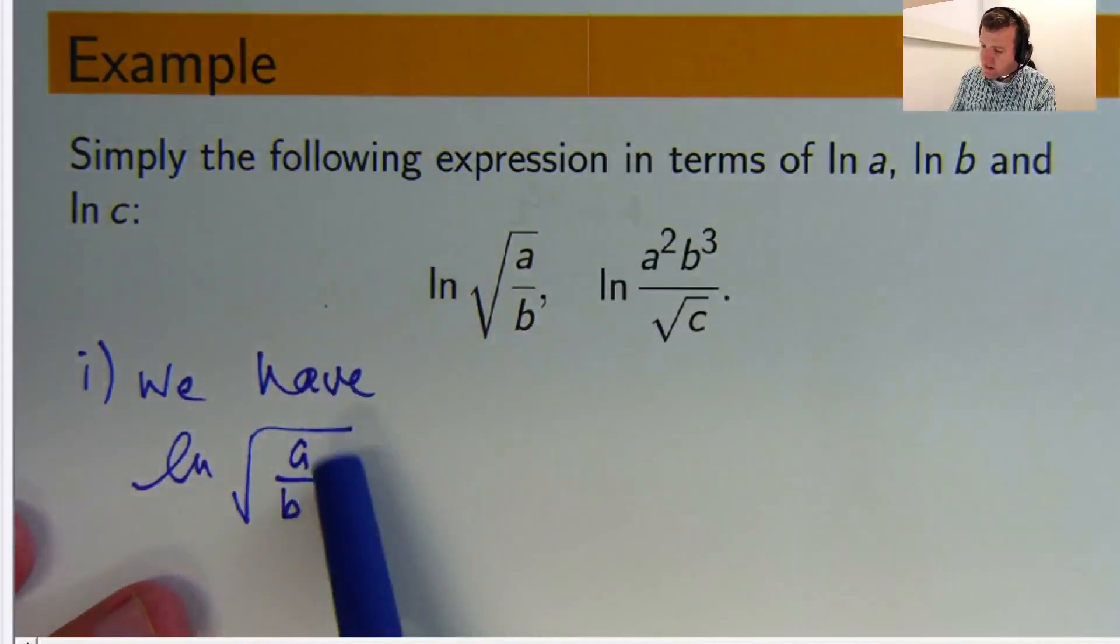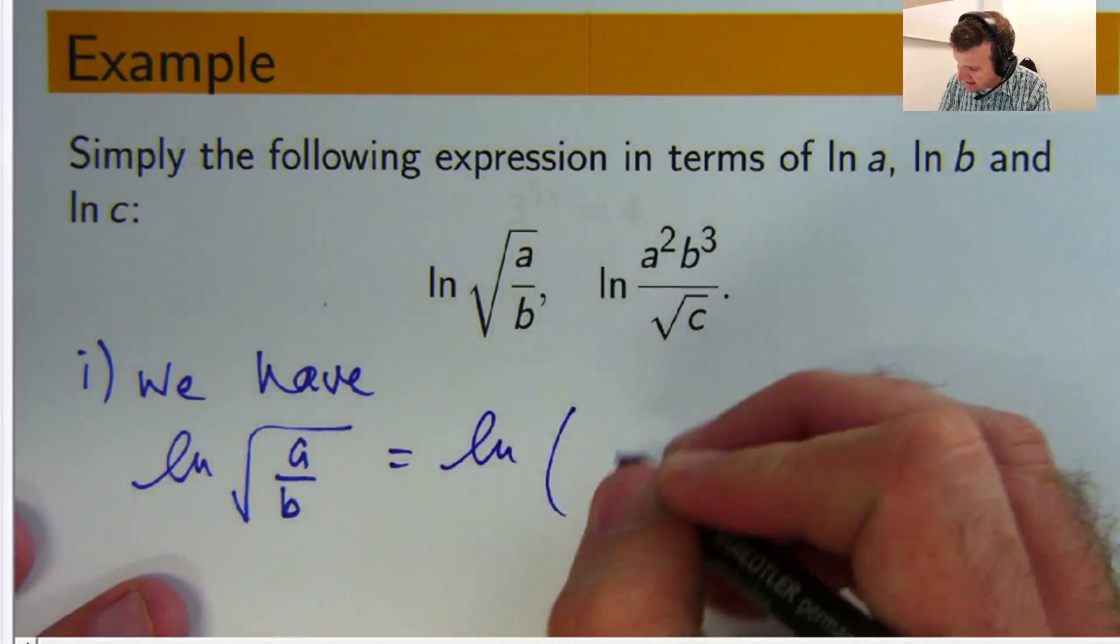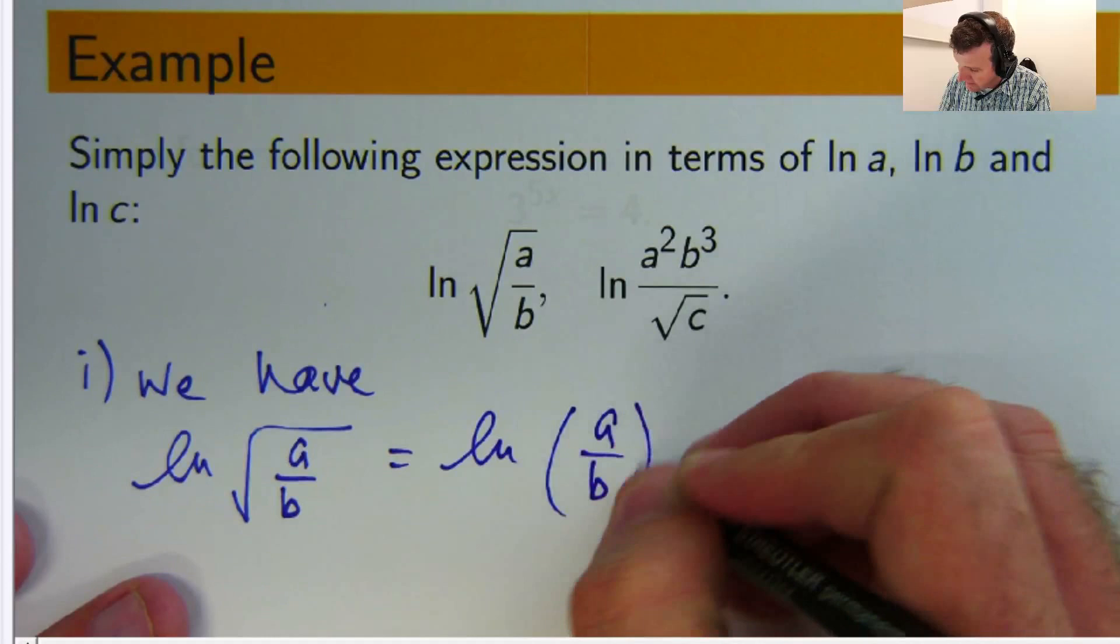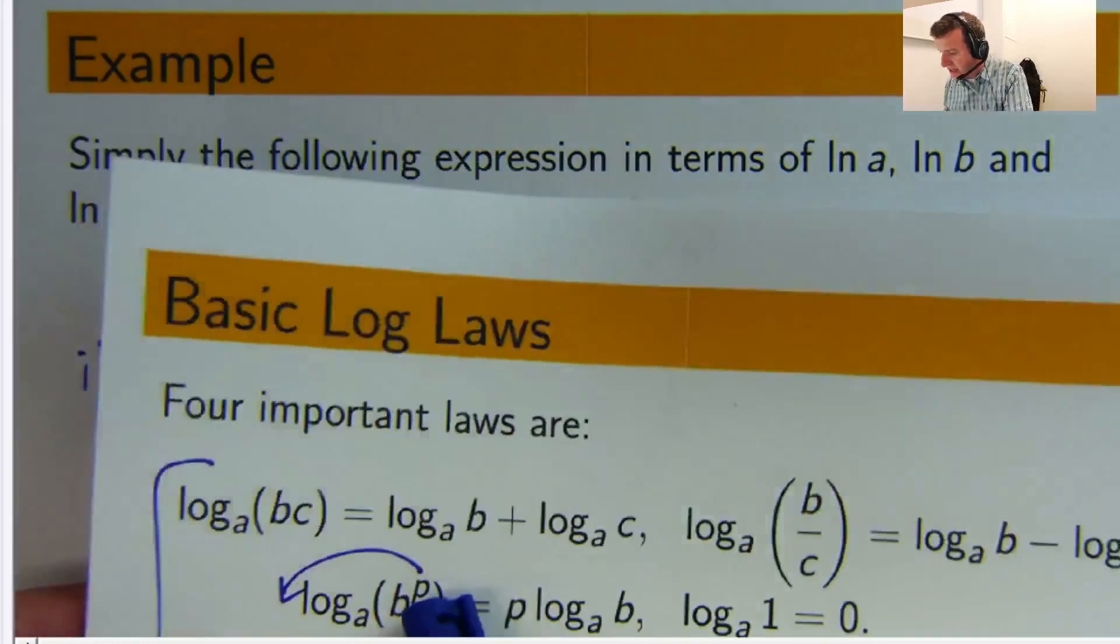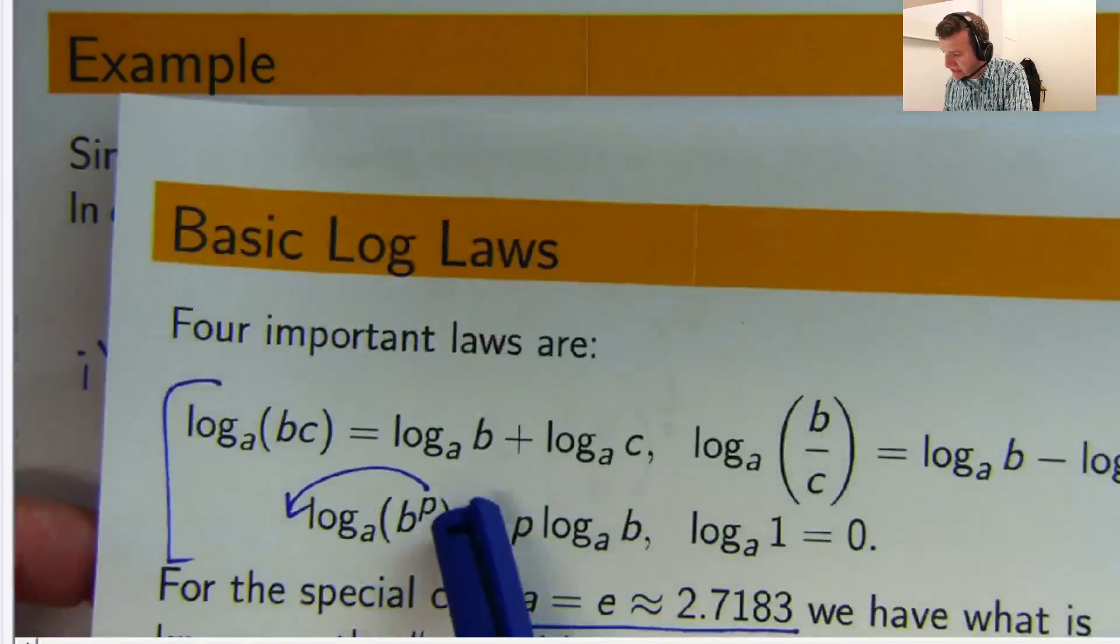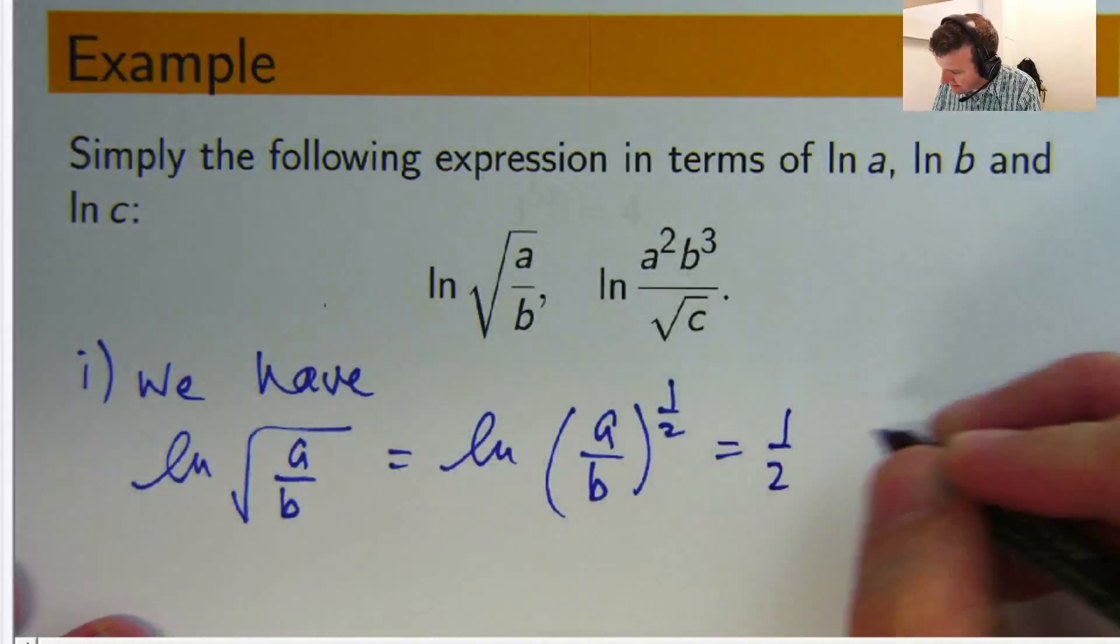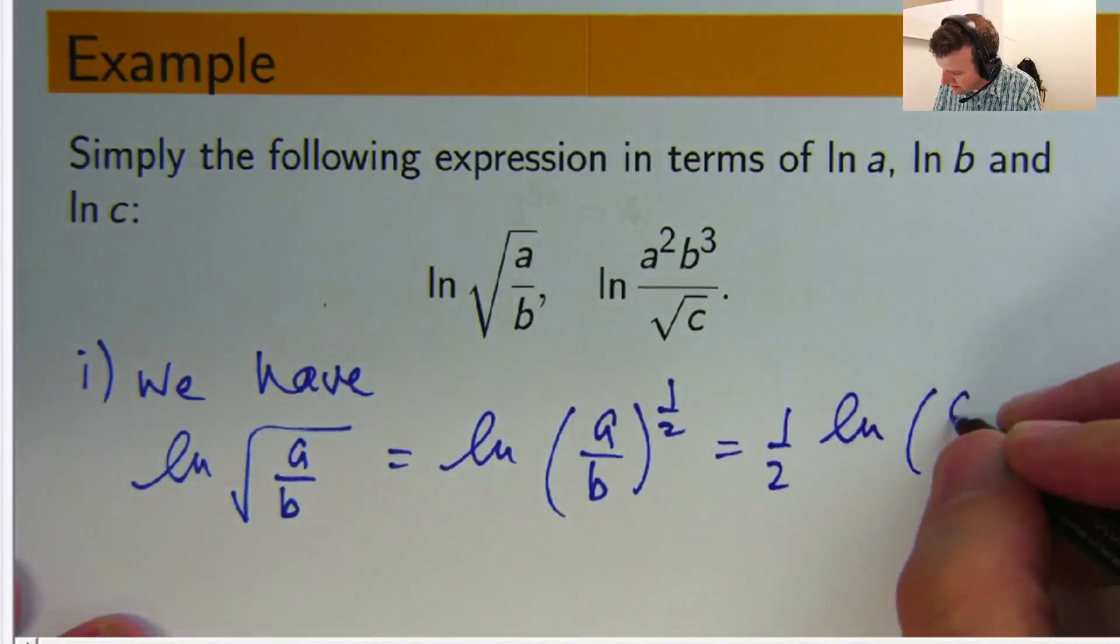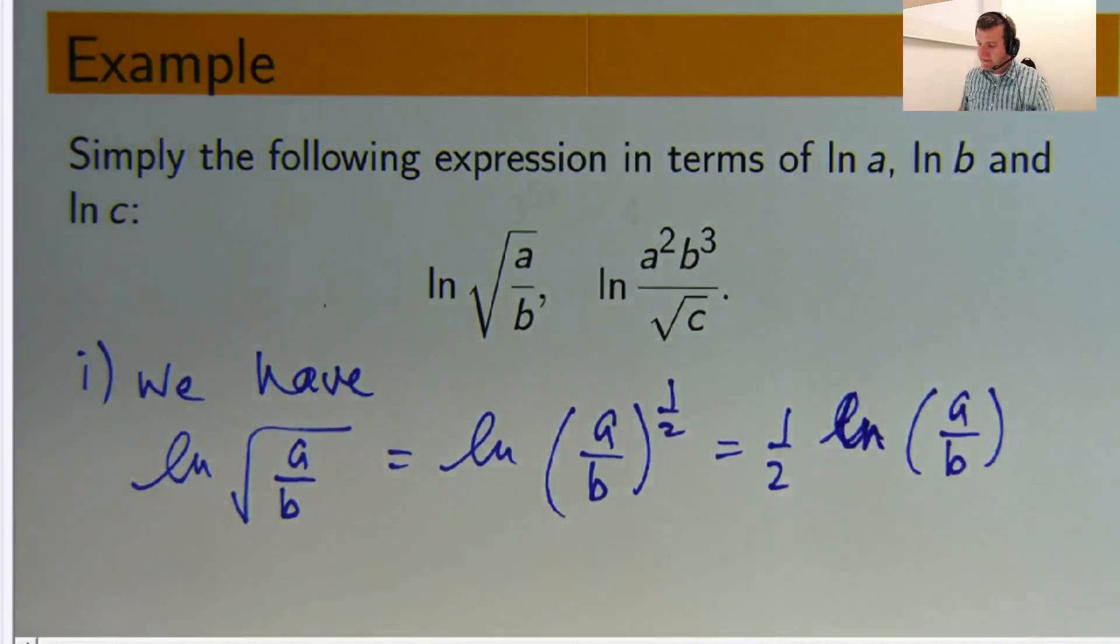How do we do it? Well, let's start with this. Firstly, we've got a quotient there, but let's write it firstly as a power. So, if I look here, I can go, well, okay, I've got a power there. Let's take the power to the front.